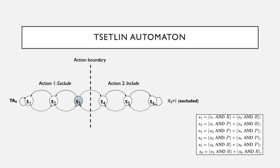Before going into further details of the reachability analysis, it's important to understand the Tsetlin automaton. As proposed by Mikhail Tsetlin in the 1960s, the idea is that you have a bounded state space — in this particular example, a simple bounded state space with six different states. Each state is clearly defined by transitions from neighboring states. For example, S3 can only transition from S2 or S4 — either by penalizing from S4 into S3, or by rewarding from S3 into S2. These can be defined by simplified logic expressions for the state transitions, though we haven't included probabilistic pathways here to keep it simple.